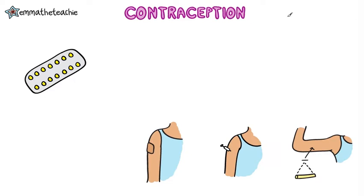Methods of contraception can be split into hormonal and non-hormonal. We'll start with the hormonal methods, and as you need to be able to evaluate the different types of contraception, we'll look at advantages and disadvantages of each.